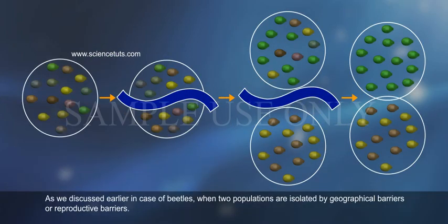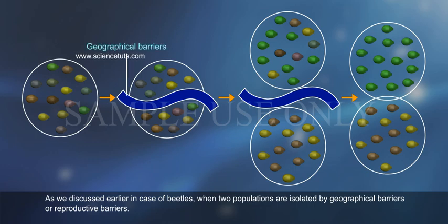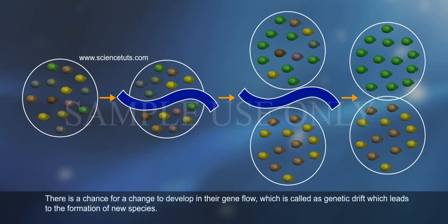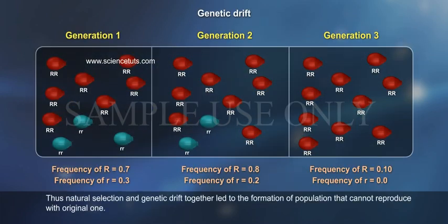As we discussed earlier in the case of beetles, when two populations are isolated by geographical barriers or reproductive barriers, there is a chance for a change to develop in their gene flow, which is called genetic drift, which leads to the formation of new species. Thus natural selection and genetic drift together led to the formation of a population that cannot reproduce with the original one.